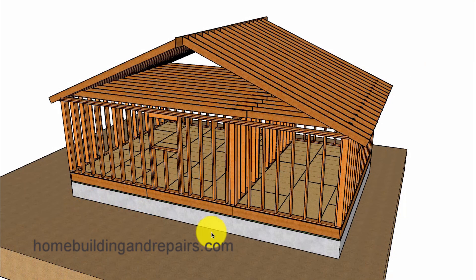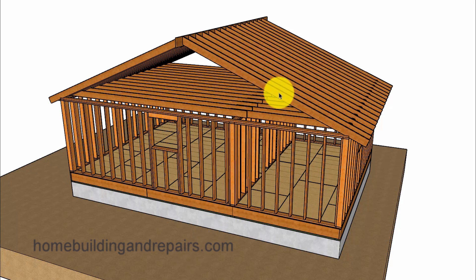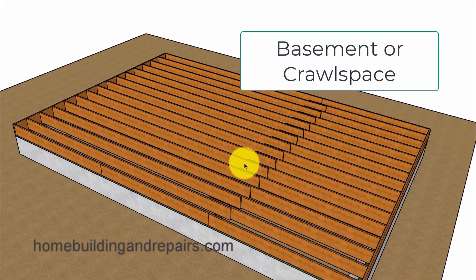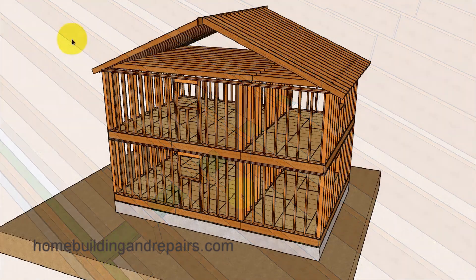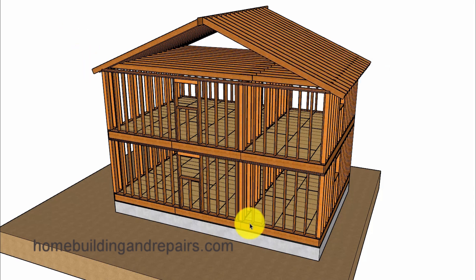In the next section marked 'roof, ceiling, and one center-bearing floor,' that would be the roof, ceiling, and the floor, covering anything underneath the floor in that situation. In the next one — 'roof, ceiling, and two center-bearing floors' — that would be a situation with a roof, a ceiling, floor number one, floor number two, and anything underneath in the crawl space or even a basement.